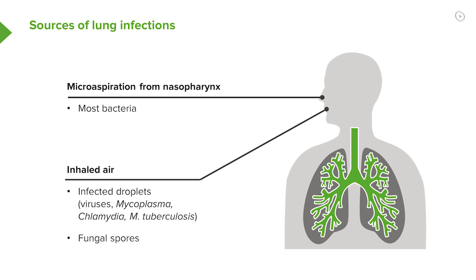Bacterial pathogens tend to come from the back of the throat. They are part of the normal commensal flora living in the pharynx and the upper respiratory tract, and they get into the lung by microaspiration. Small droplets of secretions from the upper respiratory tract make their way past the larynx, down into the lungs, and could potentially cause infection.